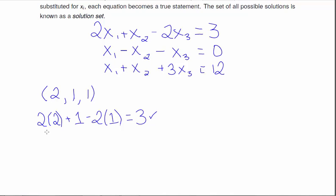Let's try the next equation. I have X1, which is 2, minus X2, which is 1, minus X3, which is 1. Well, 2 minus 1 is 1, minus 1 is 0. And this is what the second equation said.